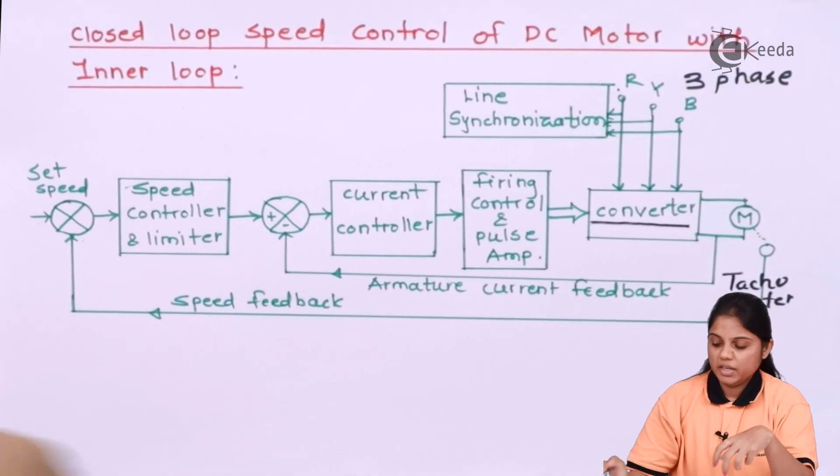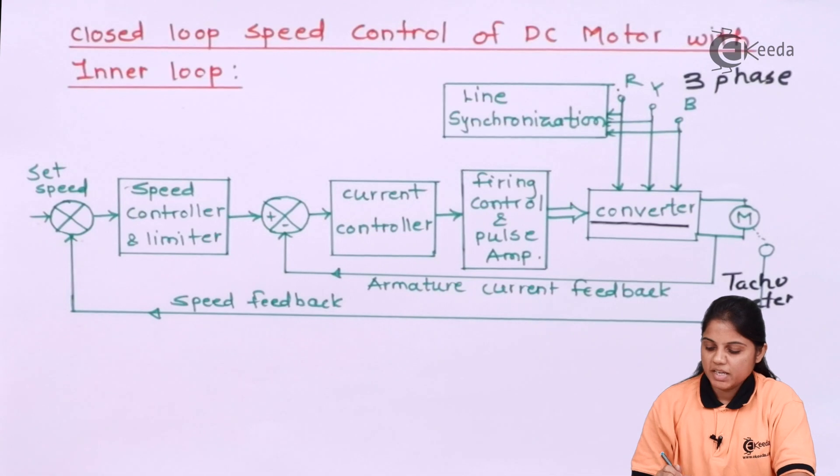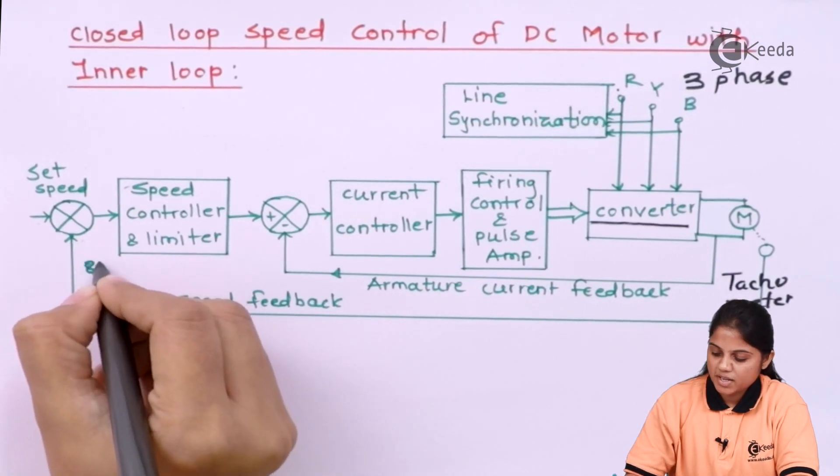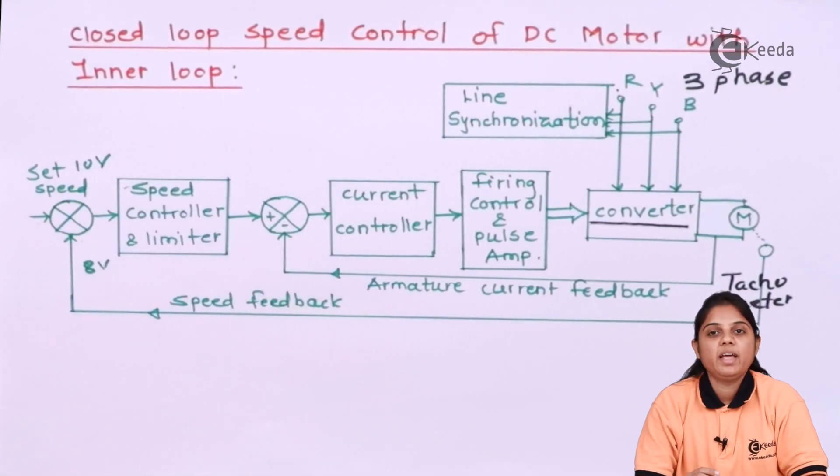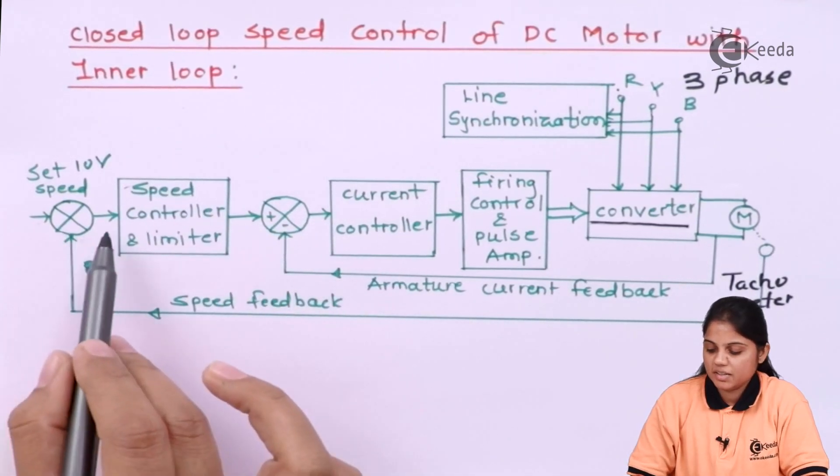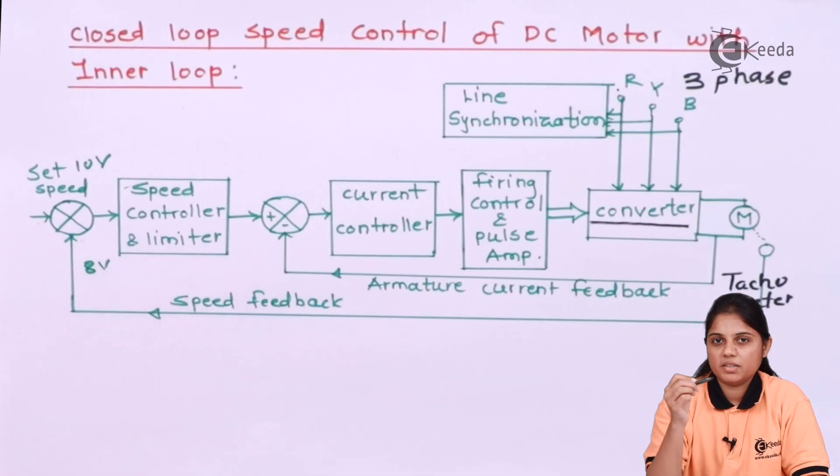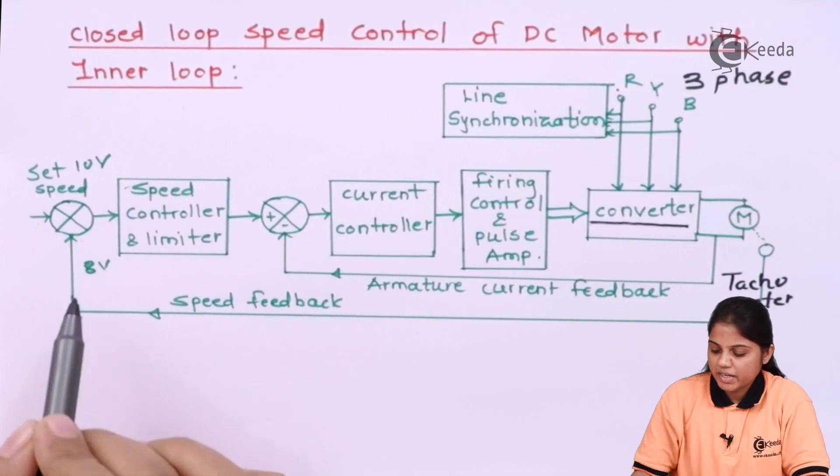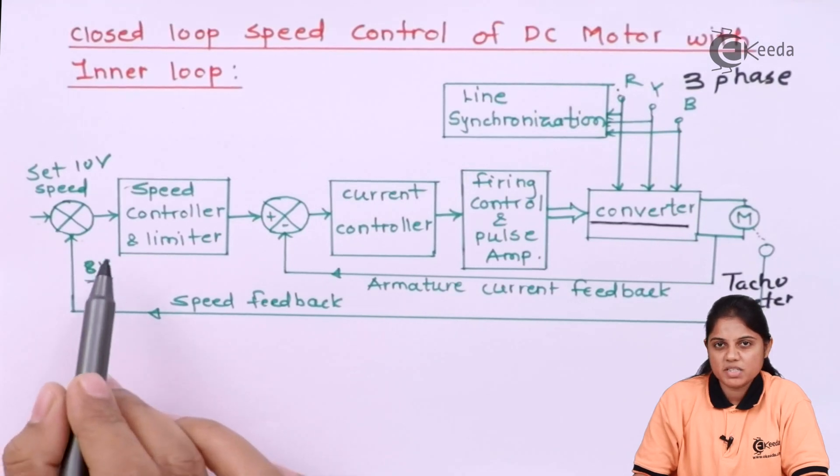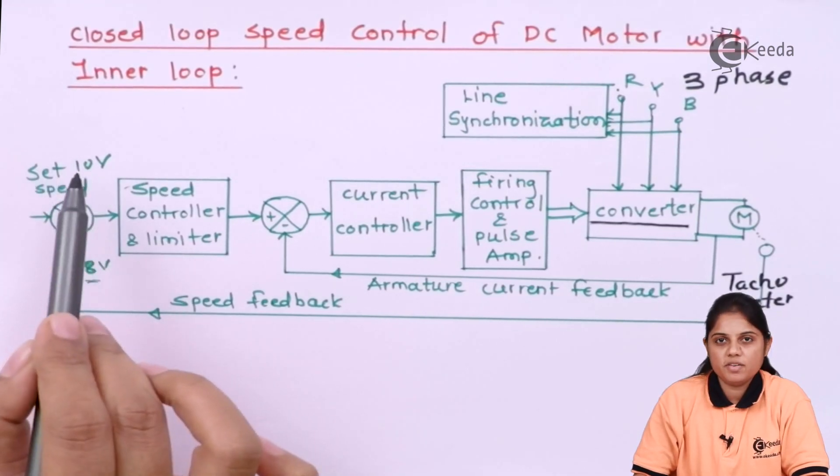And if it is giving 8 volts, that means here if you are providing 8 volts as a feedback and here the set speed is 10 volts, then it will generate an error. It will generate an error that the speed should be increased because you are getting the actual speed is 8. That means it is lower than the reference voltage.